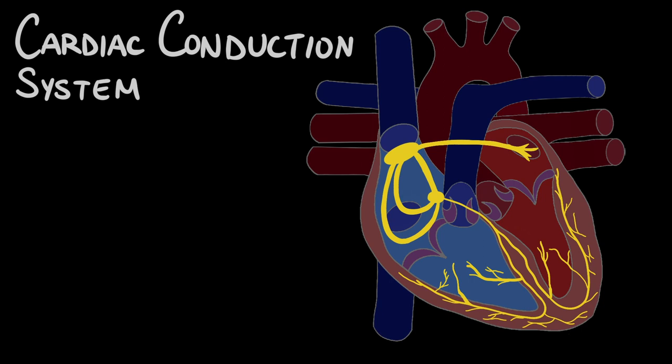The cardiac conduction system is a complex network of specialized cells and tissues within the heart that work together to ensure the coordinated contraction and relaxation of the heart muscle.